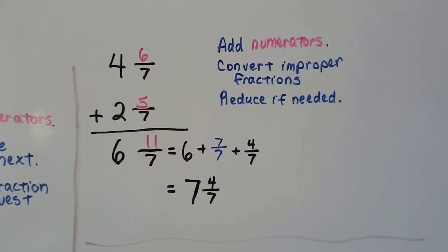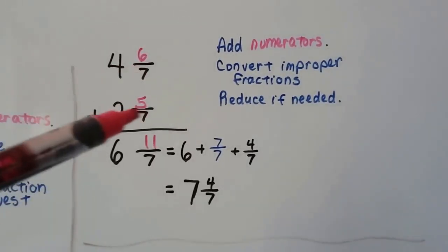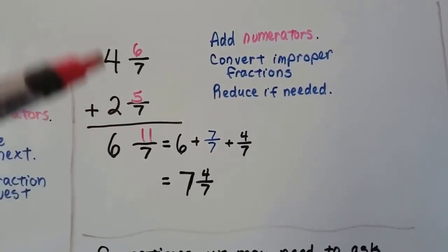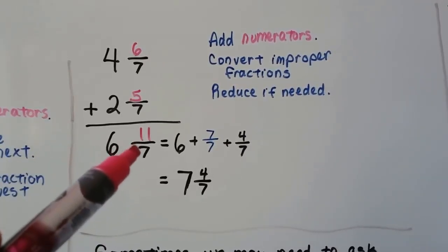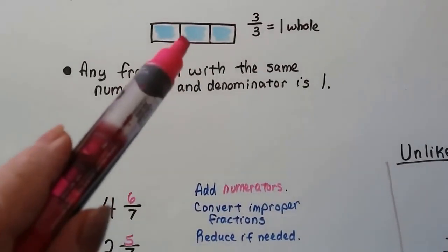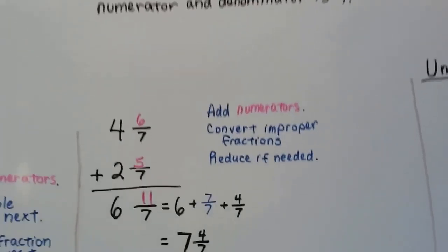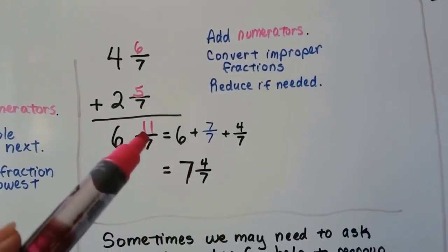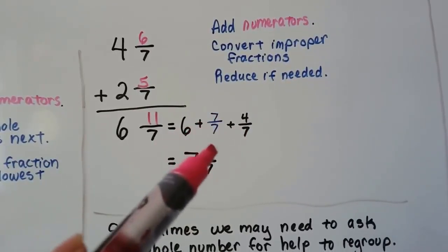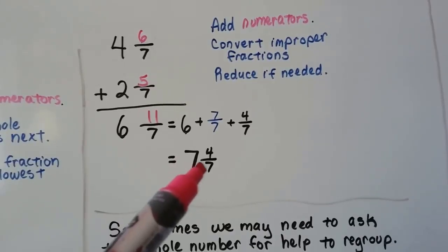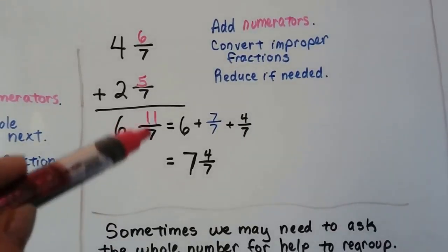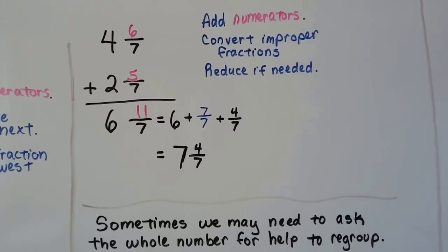Now for this addition problem, they have the same denominator so we just add the numerators: 6 plus 5 is 11. We add the whole numbers and get a 6, but that's an improper fraction. We can pull out a 7 sevenths — remember, when the numerator and denominator are the same, it equals one whole. So we pull a 7 sevenths out of 11 sevenths, and there'll be 4 sevenths left over. That 7 sevenths is a 1, which gives us 7 as a whole number and 4 sevenths as the fraction.